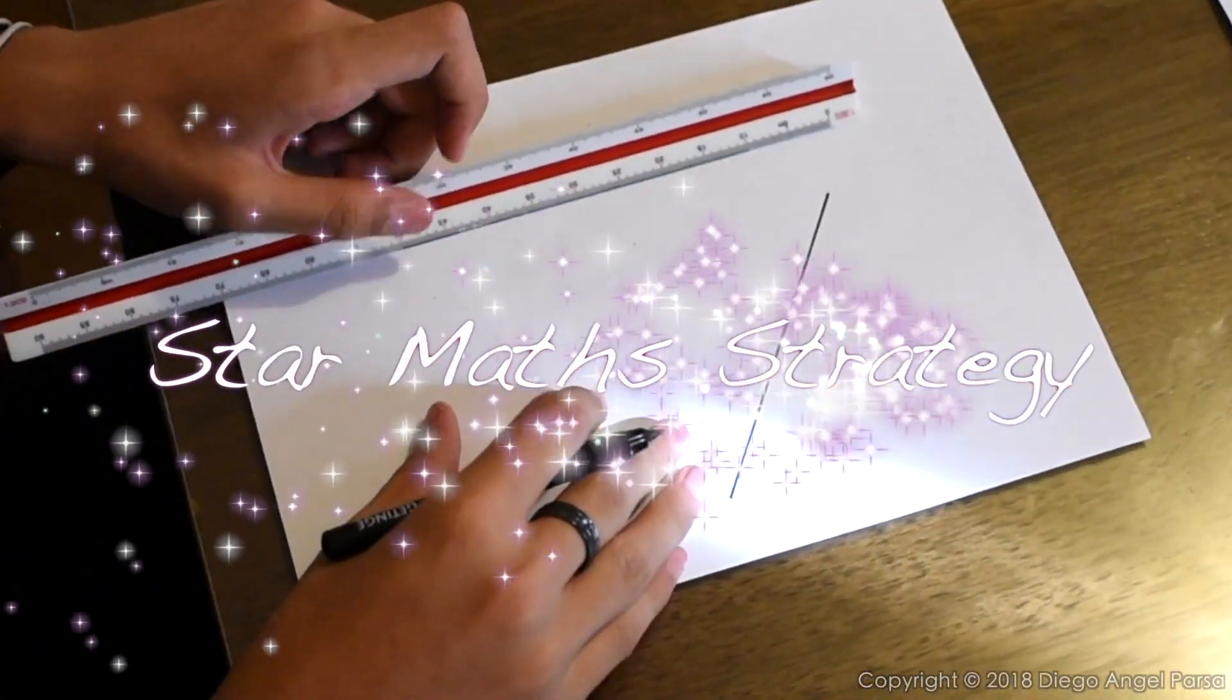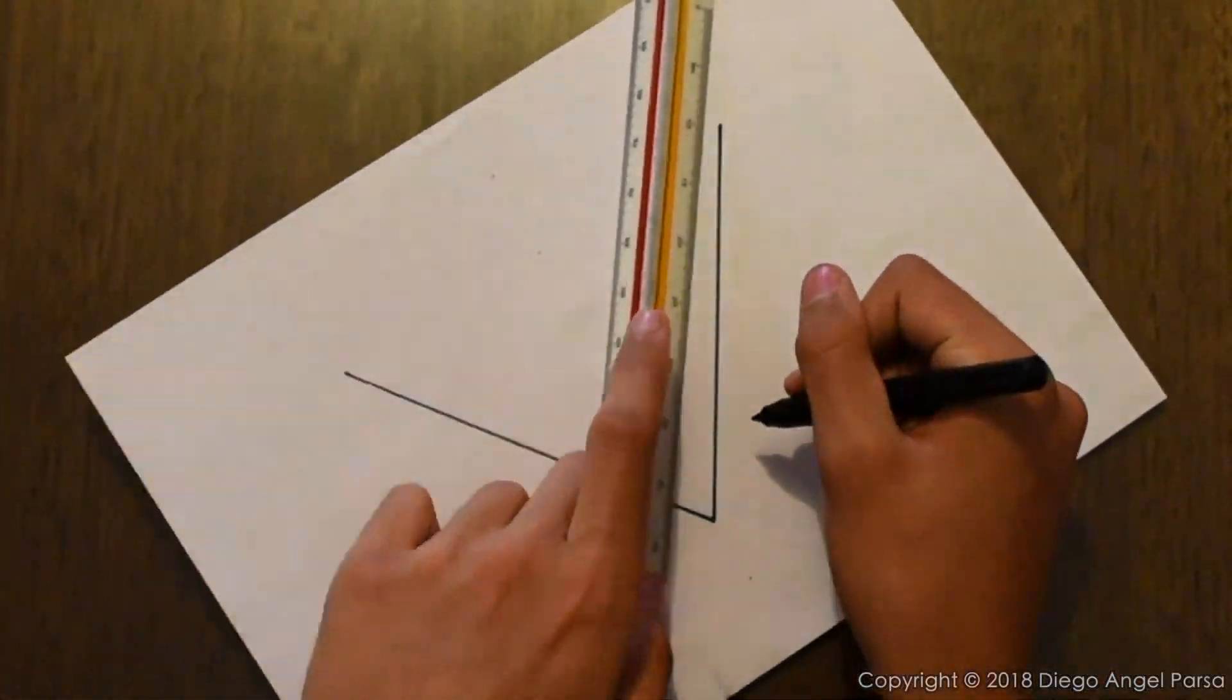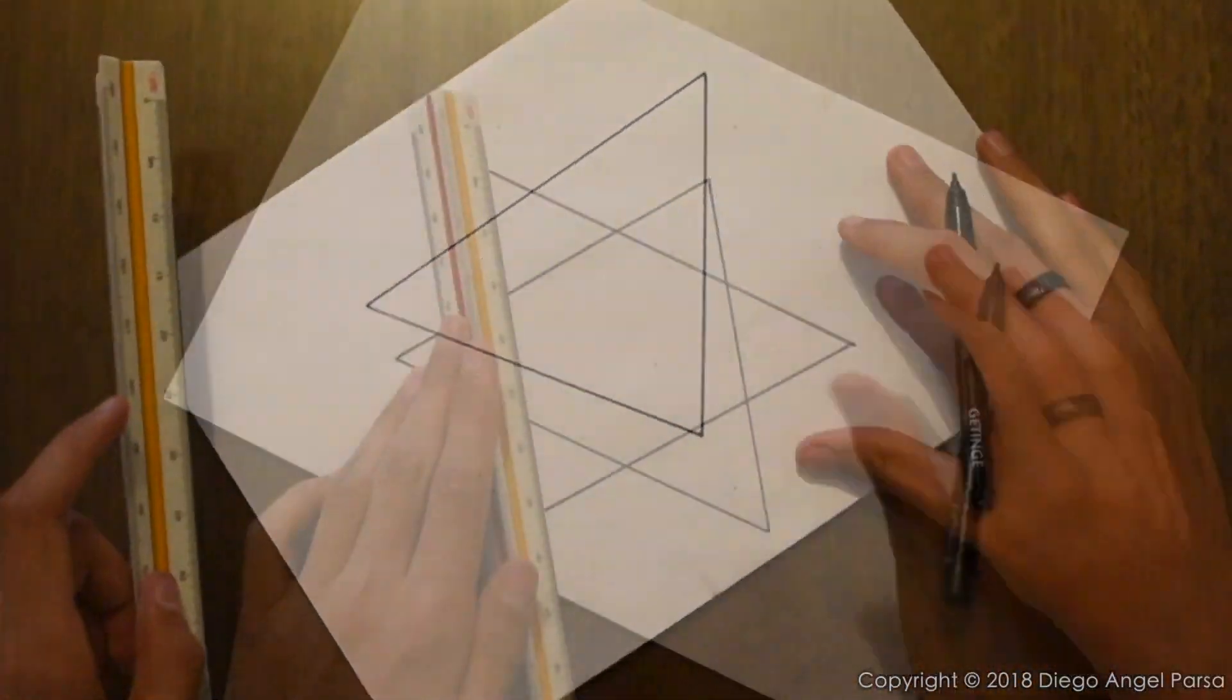Hey guys, I'm going to be showing you the star math strategy. It's a fun and easy way to solve math equations. You first have to draw a star by drawing two triangles on top of each other.